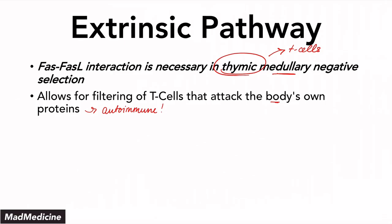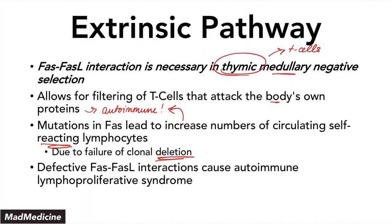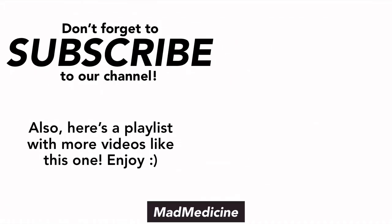The FAS-ligand and FAS interaction is important not only for cancer but also for autoimmune conditions. Mutations in FAS lead to increased numbers of circulating self-reacting lymphocytes — meaning you can get autoimmune conditions forming. This can be caused by failure of clonal deletion. Defective FAS and FAS-ligand interactions usually cause autoimmune lymphoproliferative syndromes. That's pretty much everything you need to know for the extrinsic pathway of apoptosis. Thank you for watching, don't forget to subscribe.